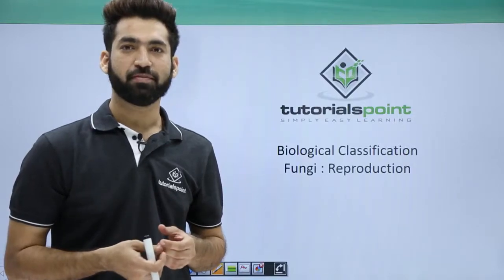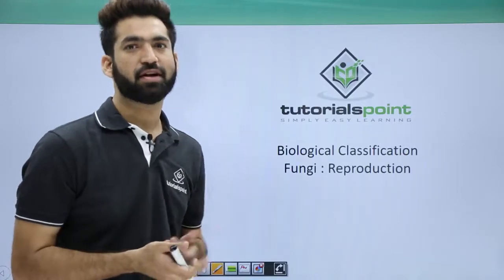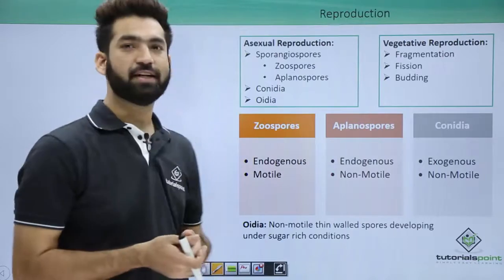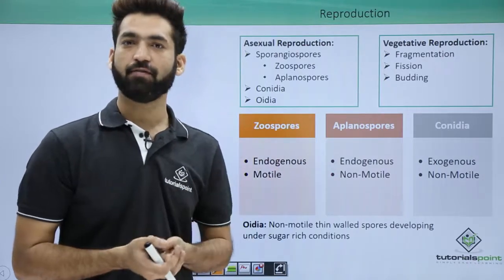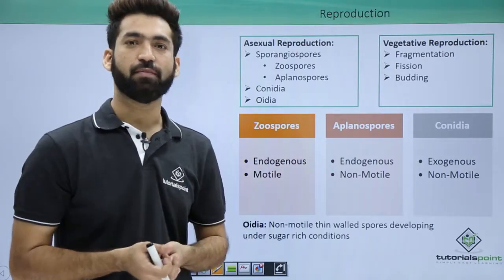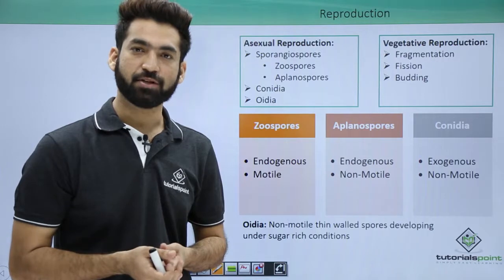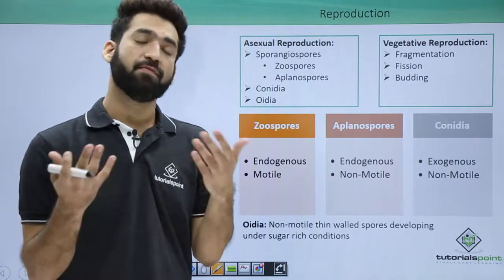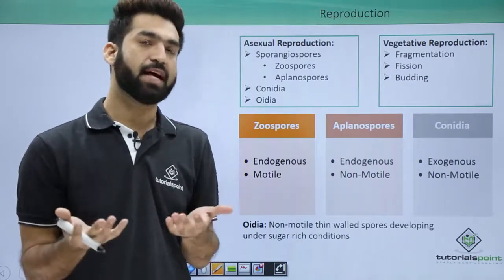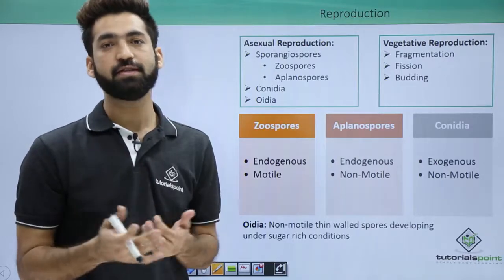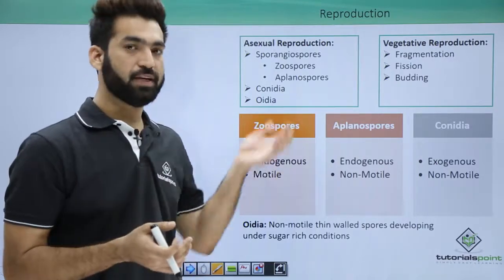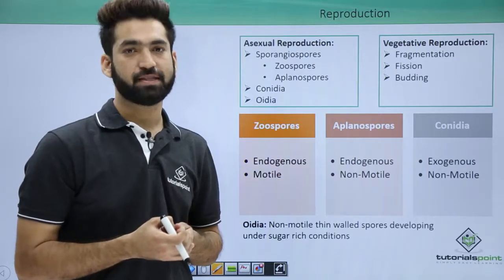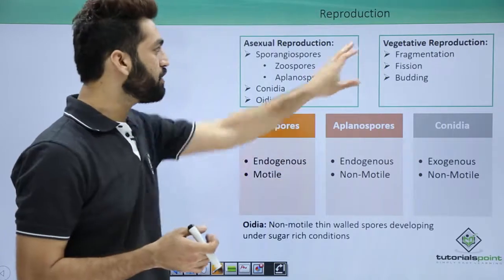In this session we'll be detailing how reproduction takes place in fungus. Fungus can reproduce with the help of vegetative reproduction, asexual reproduction, or sexual reproduction. But most of the time, when fungus reproduces, it reproduces with the help of spores. We'll have to see what type of spores are produced in which particular phase of fungus.